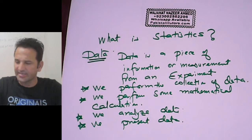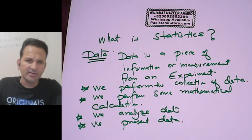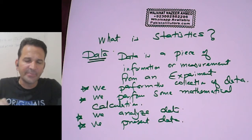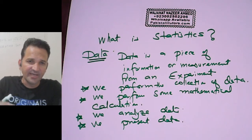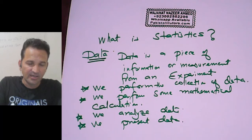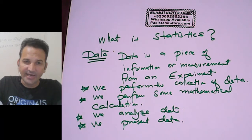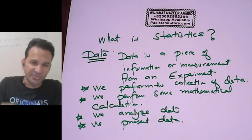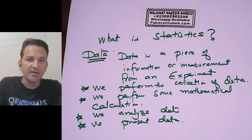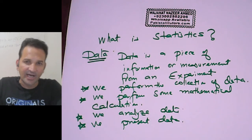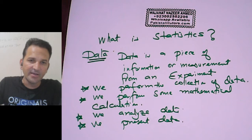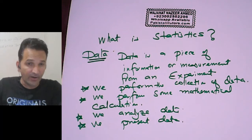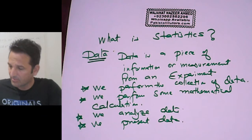How do we get data? From any experiment. For example, if we want to measure the average height of the US, we collect the heights of each person living in the United States of America. That will be our raw data, and then we perform calculations on it.